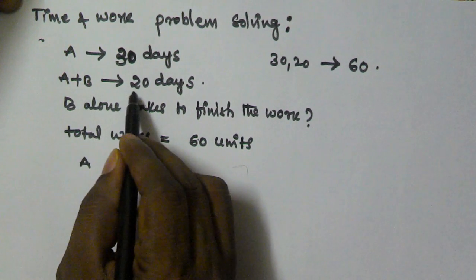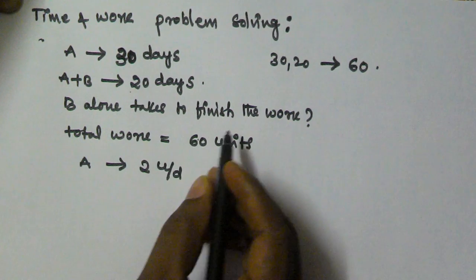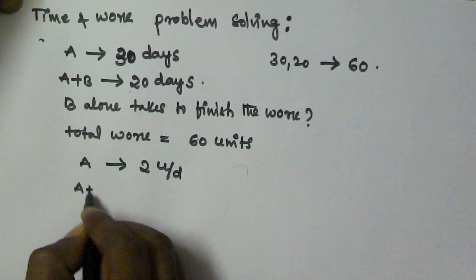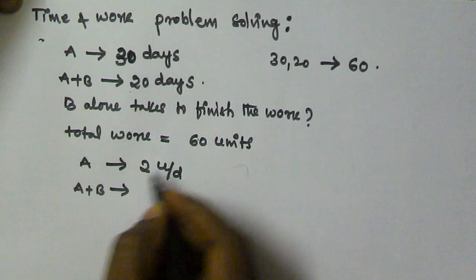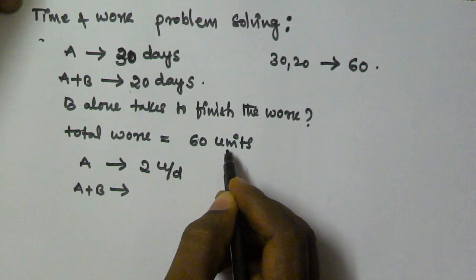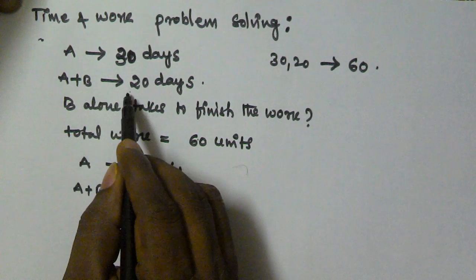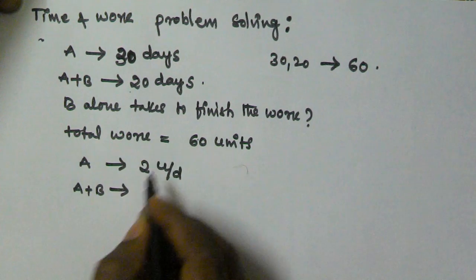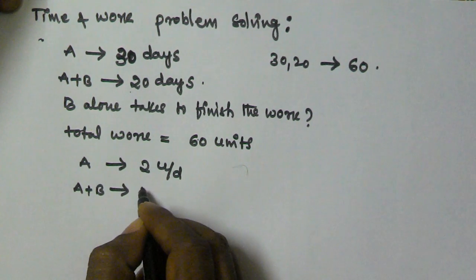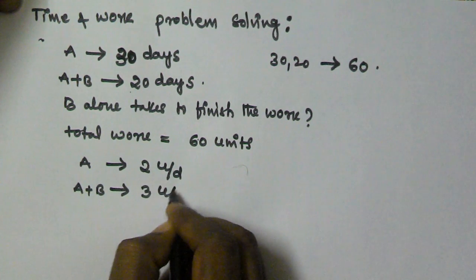A and B together will finish the work in 20 days. That means A and B together, total work is 60 units and they're finishing in 20 days. That means A and B together are finishing 3 units per day.